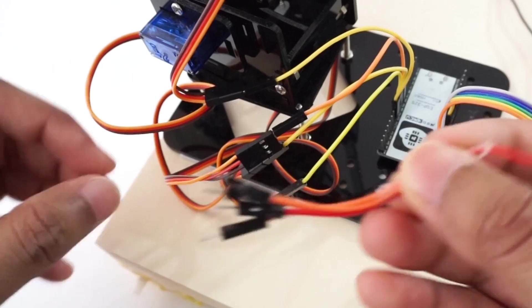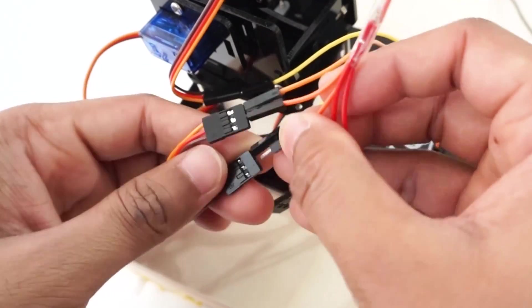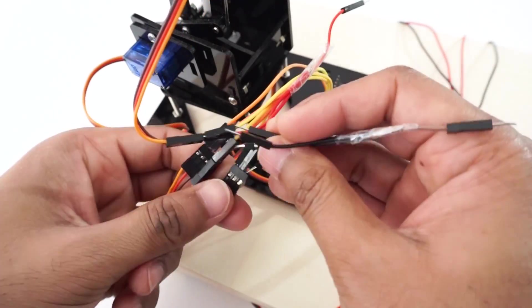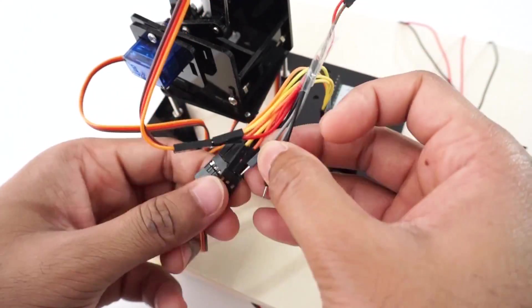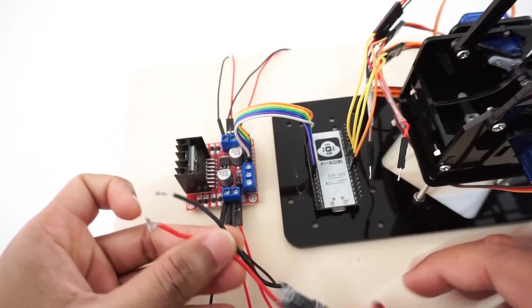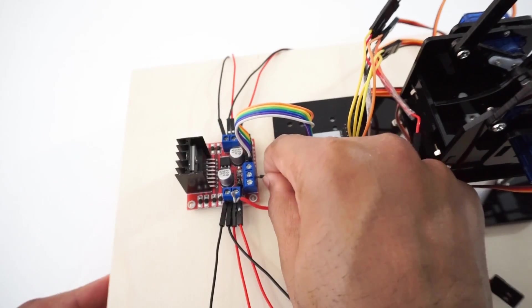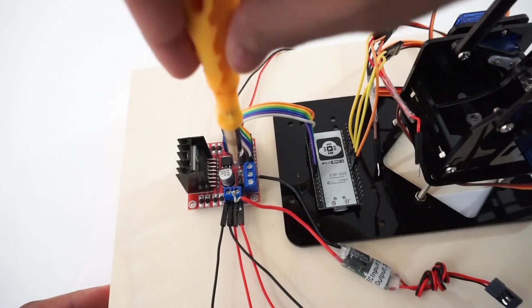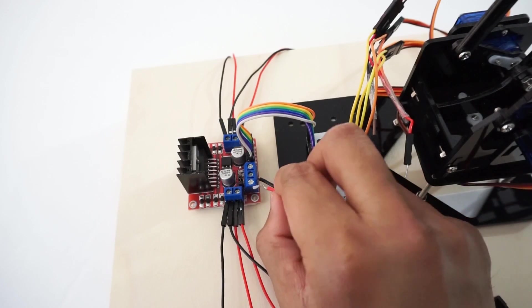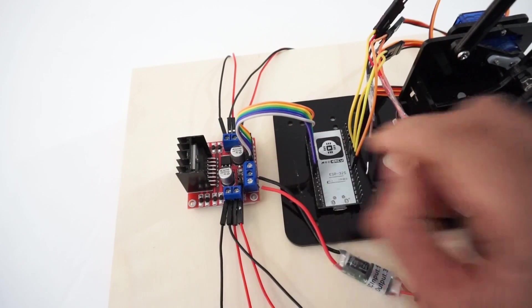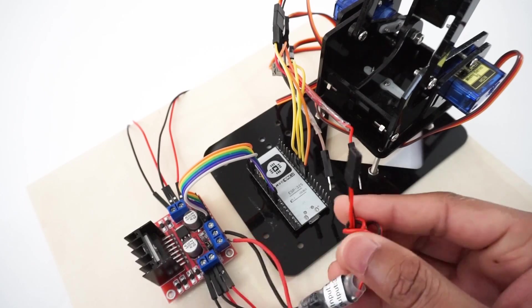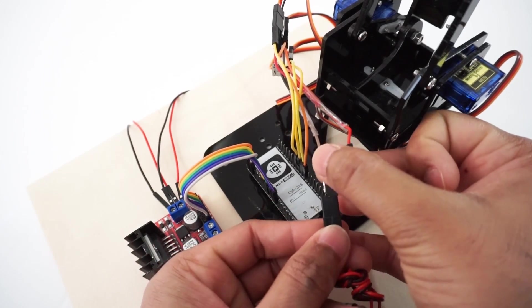We'll provide power to all servos through UBEC. For that, connect wires to plus 5V and ground of servos. Now, connect UBEC input to 12V supply. Provide plus 5V and ground to all servos from UBEC output.